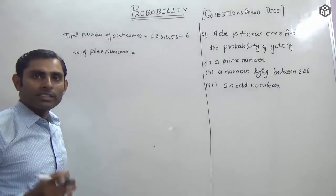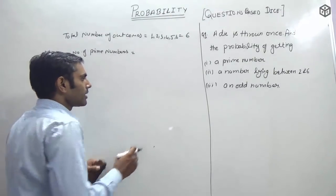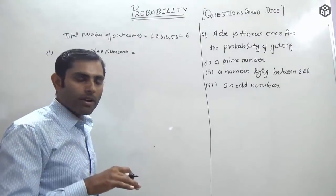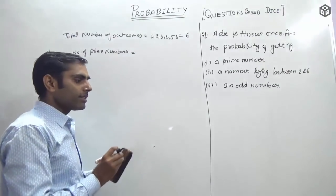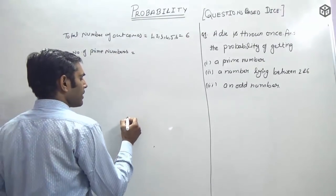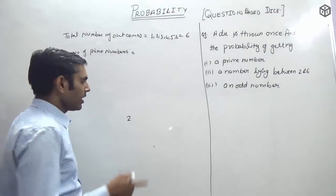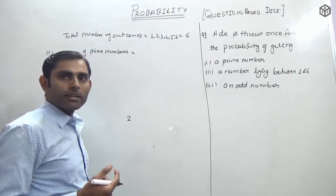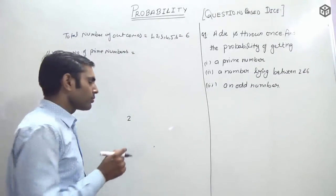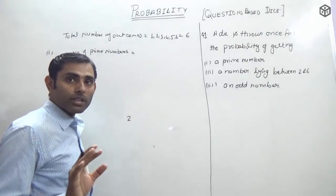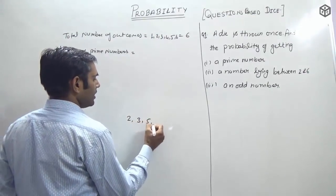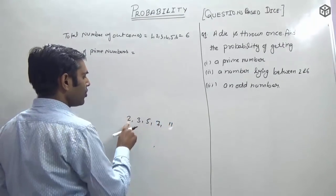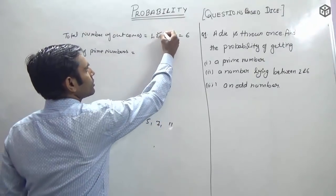A prime number is a number whose only factors are 1 and itself — we cannot factor it any other way. The smallest prime number is 2, and it is also the only even prime number. Then 3, 5, 7, 11, and so on. So from 1 to 6, the prime numbers are 2, 3, and 5.